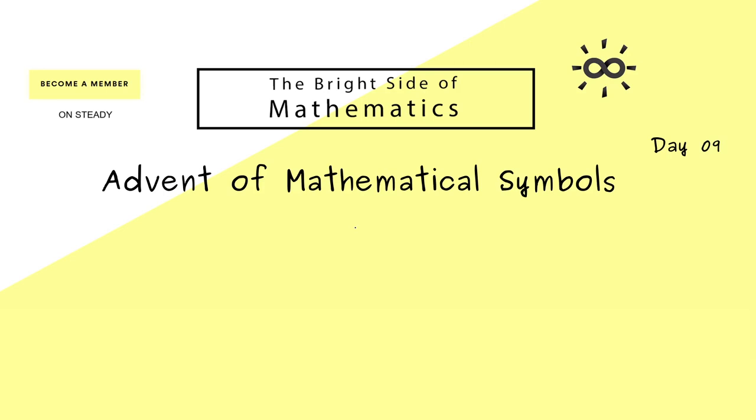The mathematical symbol of today is the restriction for maps, denoted with such a vertical line.